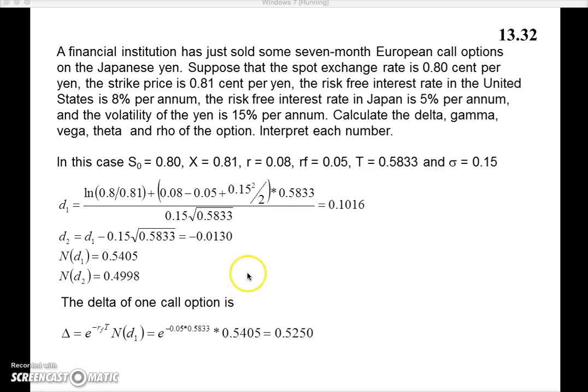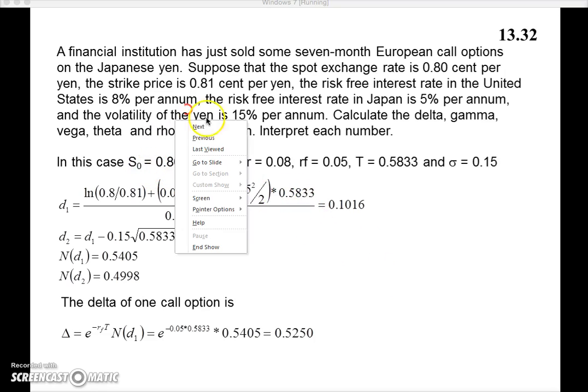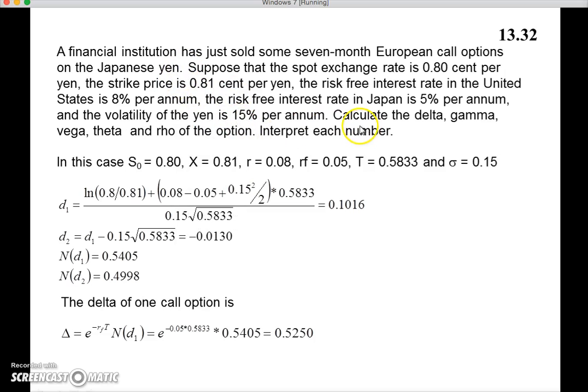First of all, what's worth noting is we have a call option. We have a set of parameters like any other parameters we've looked at before. We are going to work out the value of delta, gamma, vega, theta, and rho and offer an interpretation. To get the ball rolling, the information that we have in terms of the parameters can be summarized as: S, X (the asset value, the exercise price), the risky rate, the risk rate in the foreign currency, the time period which in this instance is 0.5833—that's 7 divided by 12—and sigma is 15%.